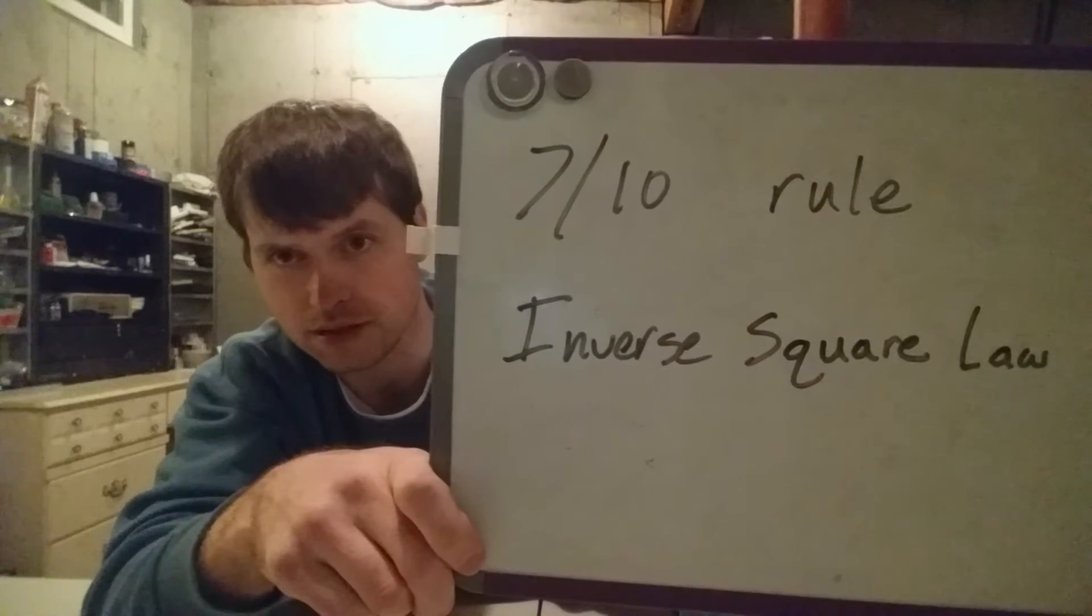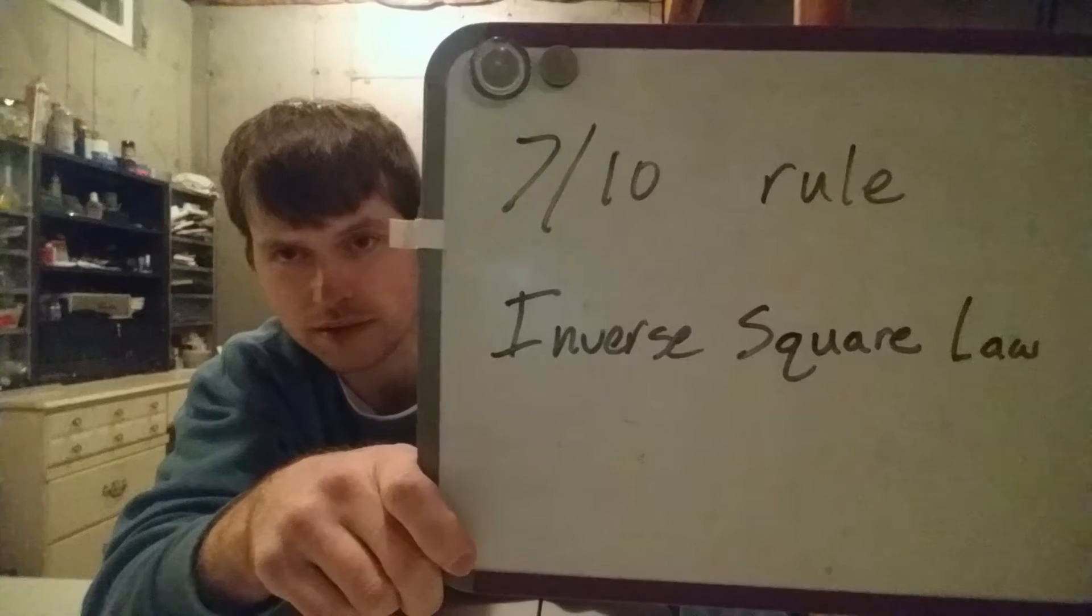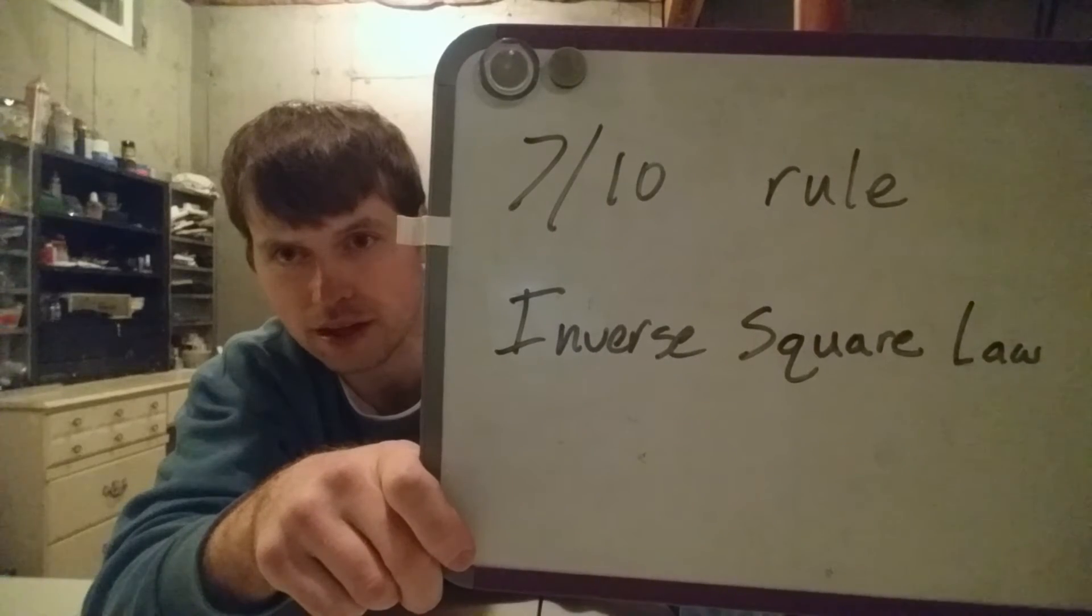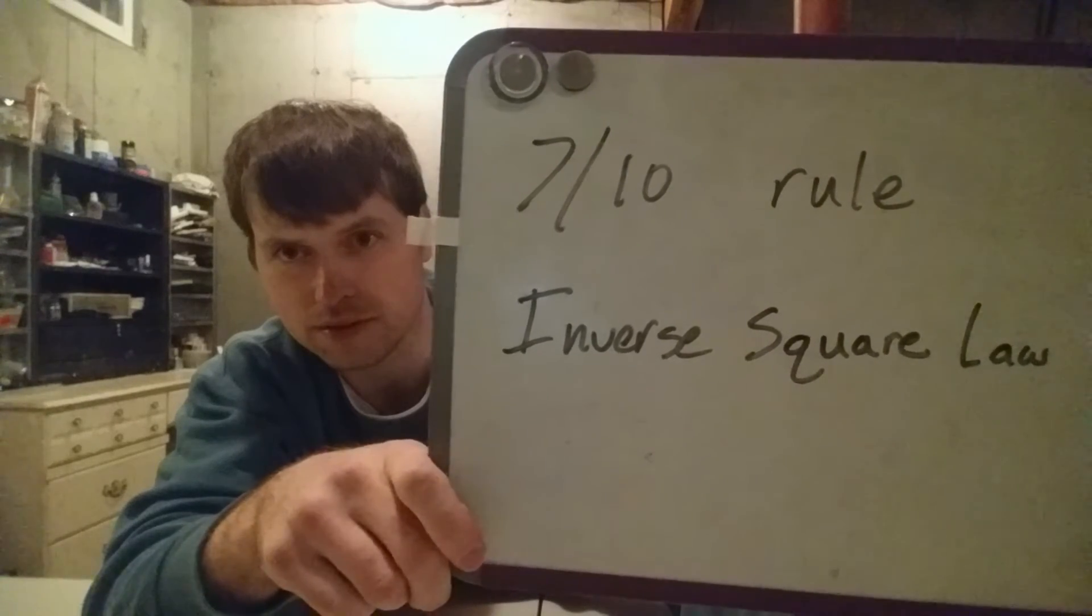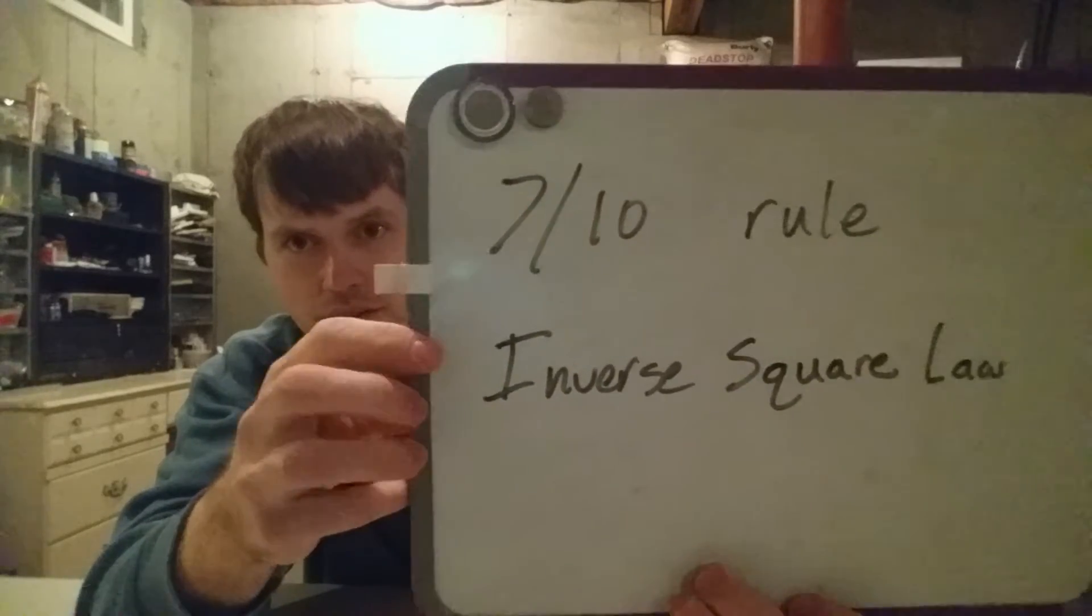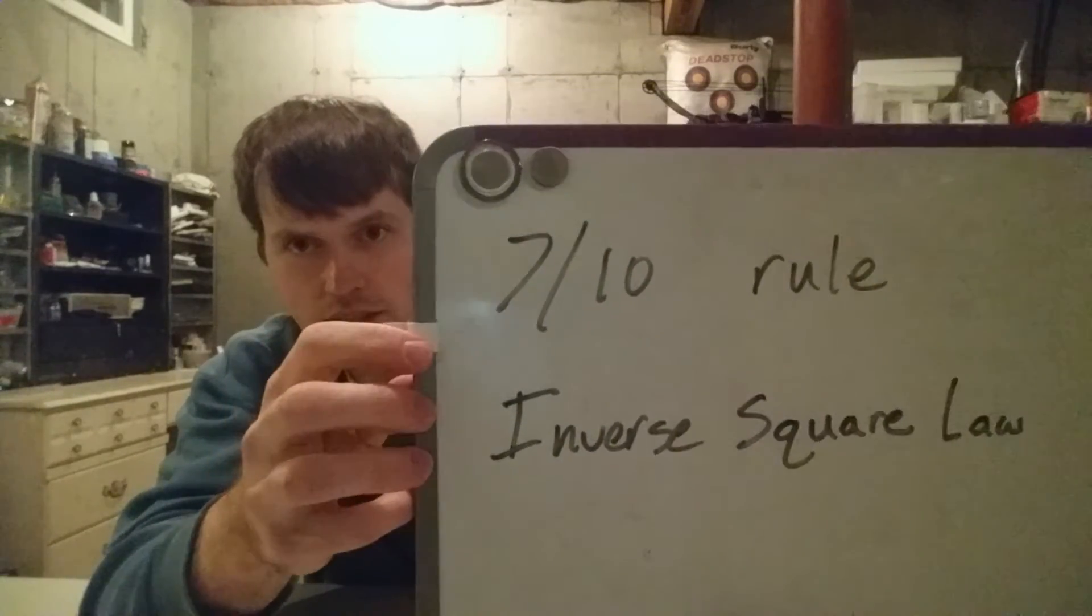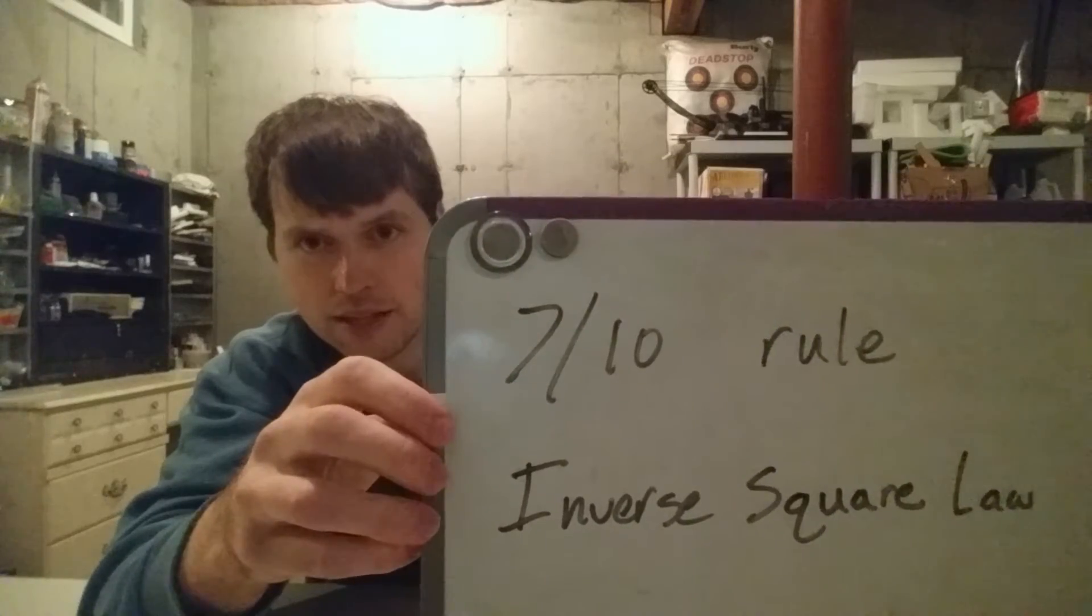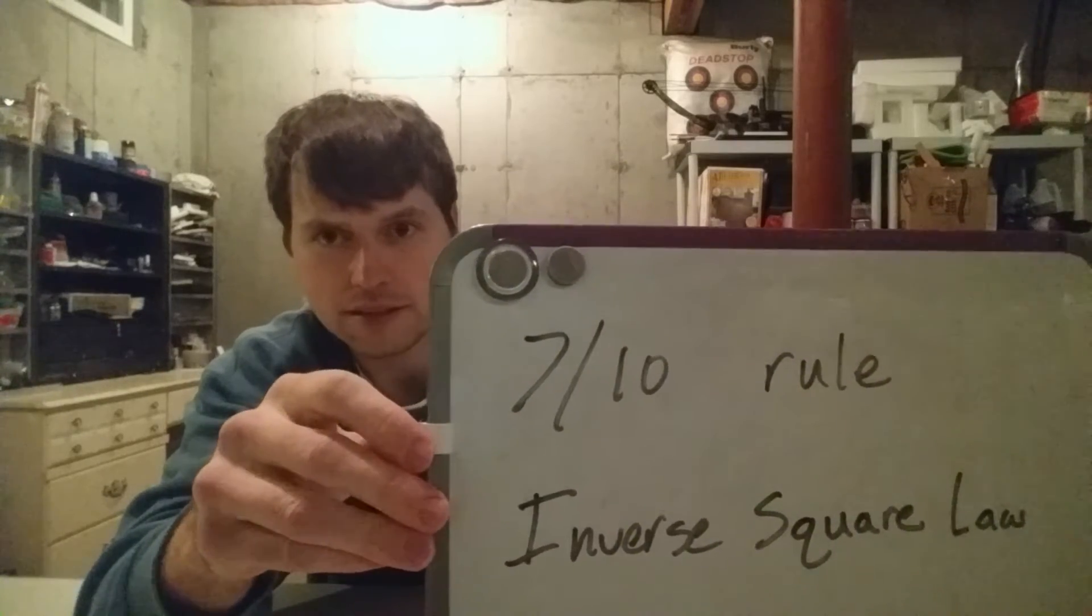The 7/10 rule means that radiation breaks down - for every time the time is increased by a factor of seven, the radiation is divided by 10. The intensity is 10 times weaker.